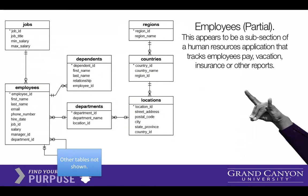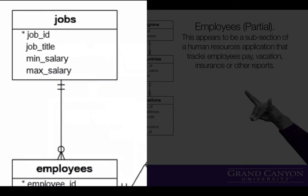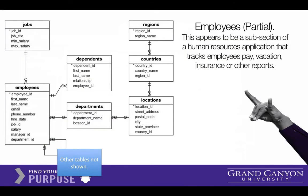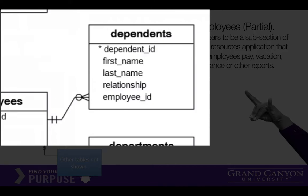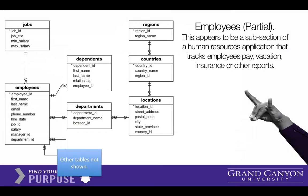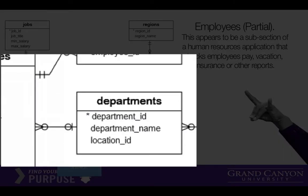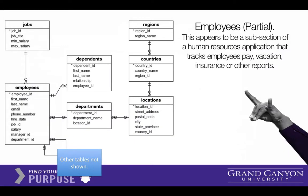Here's another app that seems to be partially implemented. If we think of employees and what's associated with them: employees could be associated with different jobs, you could have an HR application tracking the number of people getting insurance as dependents, employees work in a department, there could be multiple departments, and those departments are located in different places, different countries, and even different regions.